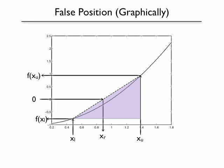And now we've got a second triangle whose base is x upper minus x_r, our root guess, and whose height is f of x upper minus zero.